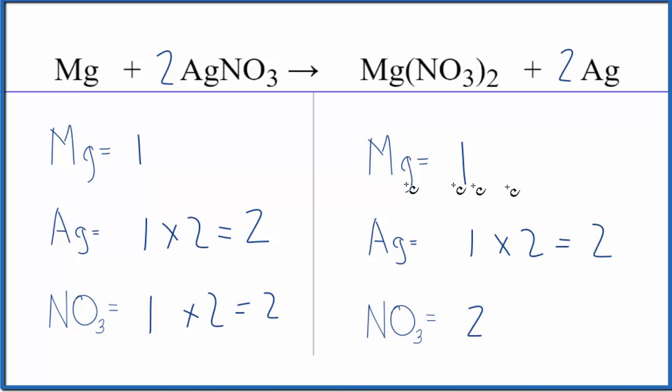This equation is balanced. So often when you're balancing single replacement reactions or double replacement reactions, if the polyatomic ion appears here, and then again on the other side, just count it as one thing. It makes it a lot easier to balance.